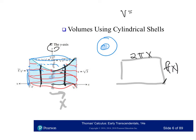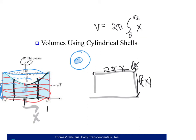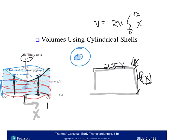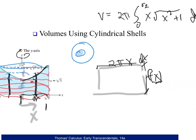The volume will be 2π∫[0 to √2] of x·(x√(x²+1)) dx. The function is y = x√(x²+1). The thickness dx is the wall. This is not as easy to integrate because I can't merge the x inside the radical — there are two separate functions — so you always want to think about u-substitution.